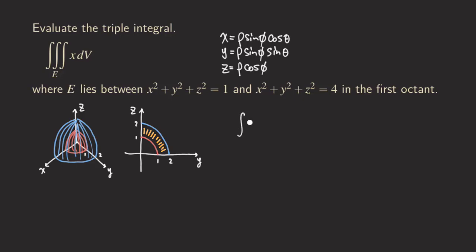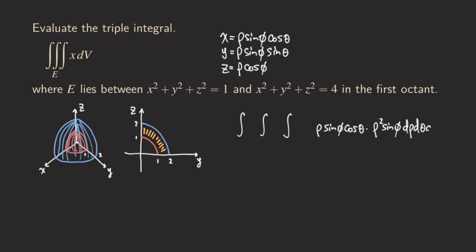Now we're ready to write down the triple integral. For the integrand, x becomes ρ sin φ cos θ. The volume element dV in spherical coordinates is ρ² sin φ dρ dθ dφ.